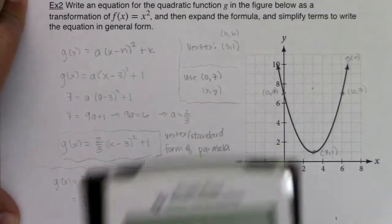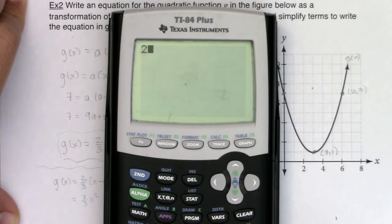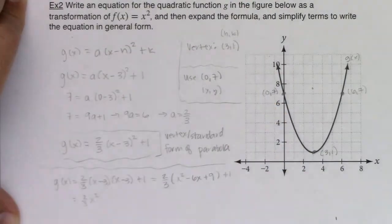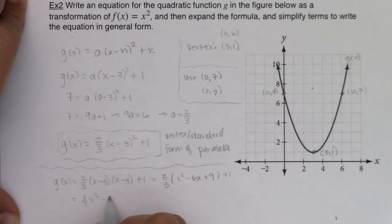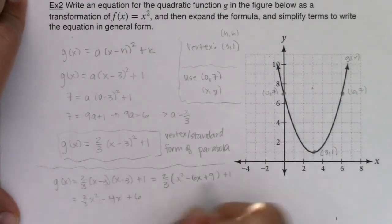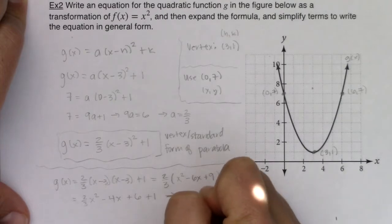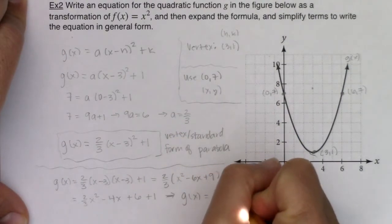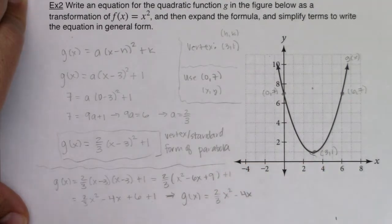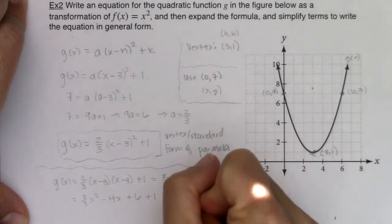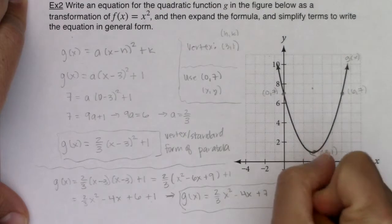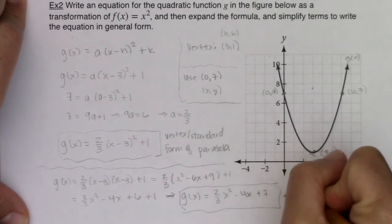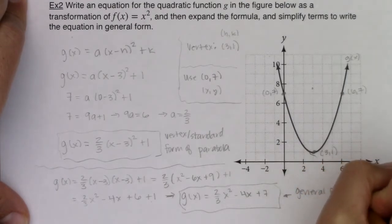2/3 times -6. You can do that in your head if you want. Or if you weren't happy with it, you could always use your calculator. 2/3 times 6 would give me 4. But I actually technically have 2/3 times -6, so I have -4x. 2/3 times 9. Again, you could do that with your calculator. I'm just going to do it in my head. It's +6 and then I have this +1 here. So ultimately, if I want to get to general form, we know g(x) is equal to 2/3 x² - 4x + 7. And this right here, that is ultimately what they were asking me for. This is the general form of your parabola.